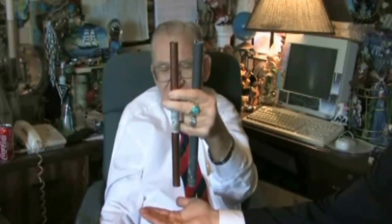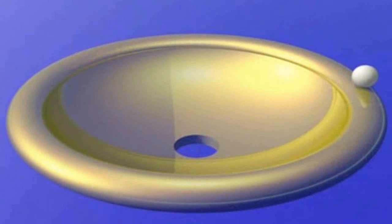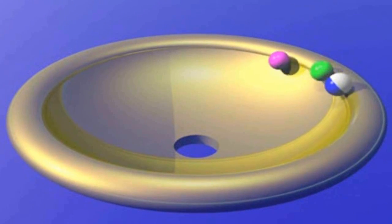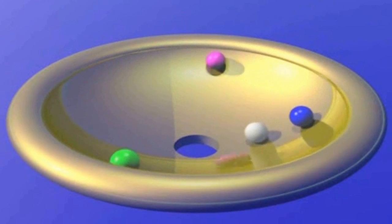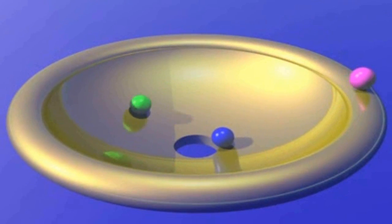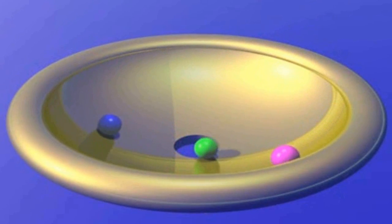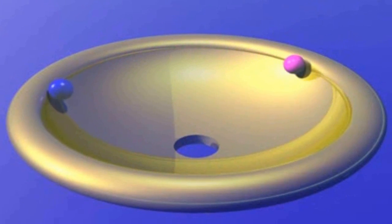We see our bowl again. Well this time we're going to put several balls on the lip of the bowl. Watch what happens as they roll down into the middle. Well as you can see they don't all travel along the same path. In fact they can travel along different paths.